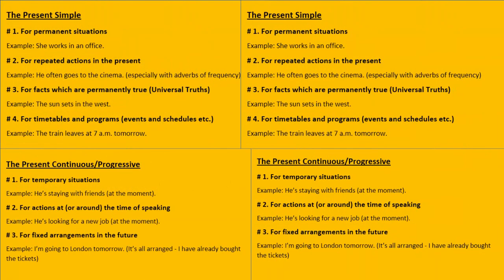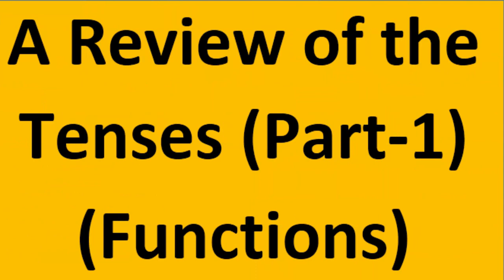I hope you have been able to understand these tenses and their functions. We have already discussed the format and structure of tenses. There are only two things to remember: how to use and when or why to use. How to use was covered in the initial lectures — for example, present simple uses the first form of verb with 'do' or 'does' as auxiliaries; present continuous uses 'am/is/are' as auxiliaries with the fourth form of the verb.